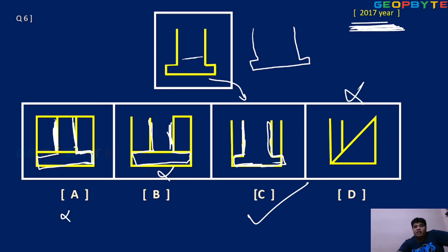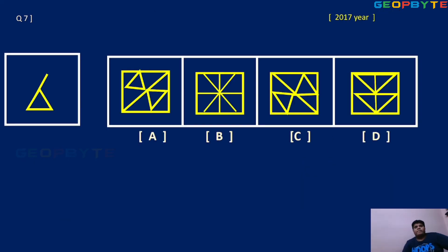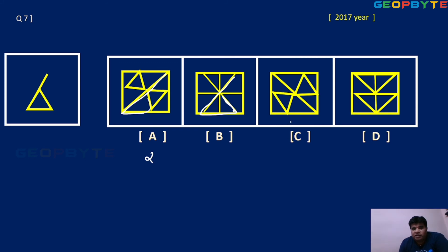Here in mental ability, almost 90% is visual representation — very important. The question figure is a line and triangle shape. In option A, the triangle shape is not existing — wrong. In option C, line not there. In option D, line not there. So option B is the right answer.